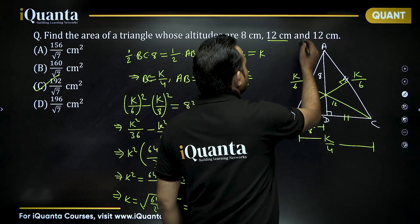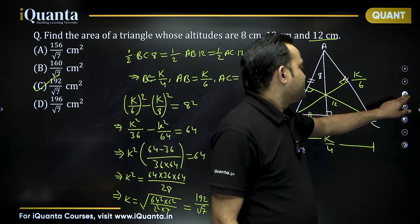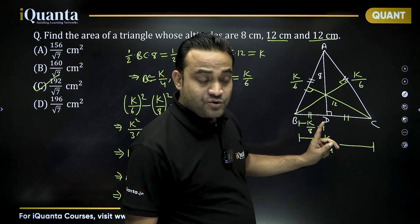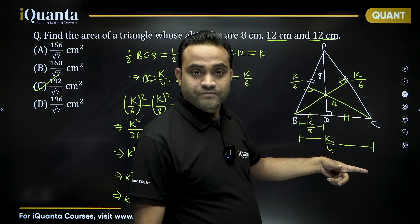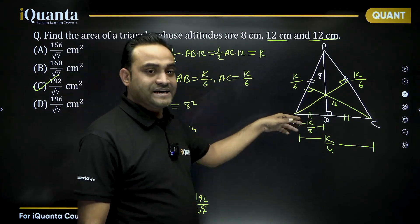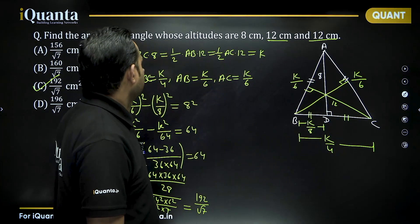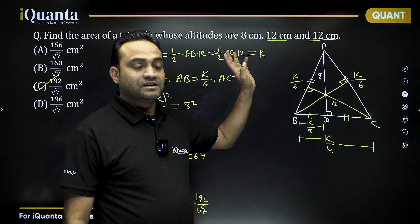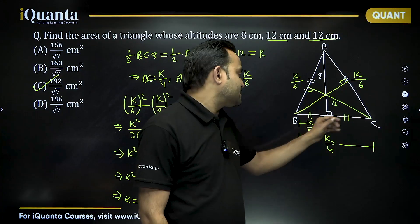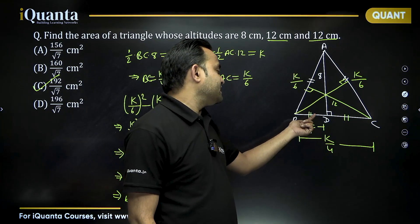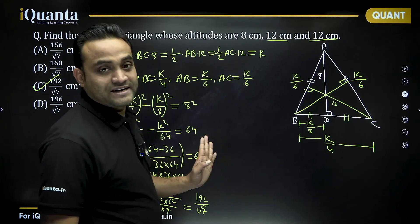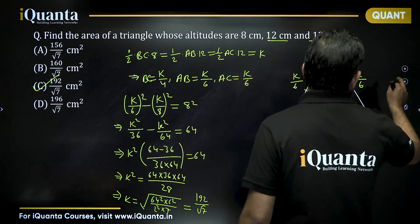To recap: since two altitudes are equal, the triangle is isosceles with AB = AC. The altitude to the unequal side is also the median. Expressing each side in terms of area k — AB = k/6, BC = k/4, BD = k/8 — and then applying the Pythagorean theorem gives the value of k directly.